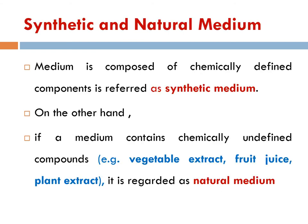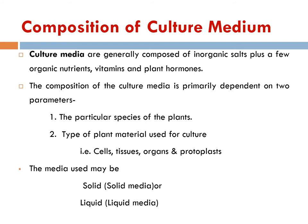There are two types of media: synthetic media and natural media. Synthetic media, also called chemically-defined media, includes well-known media such as MS medium and N6 medium. Natural media have undefined chemical components and include vegetable extracts, fruit juice, and plant pulp. In synthetic media, there are inorganic and organic nutrients, which are further classified as macronutrients and micronutrients, vitamins, and plant hormones.